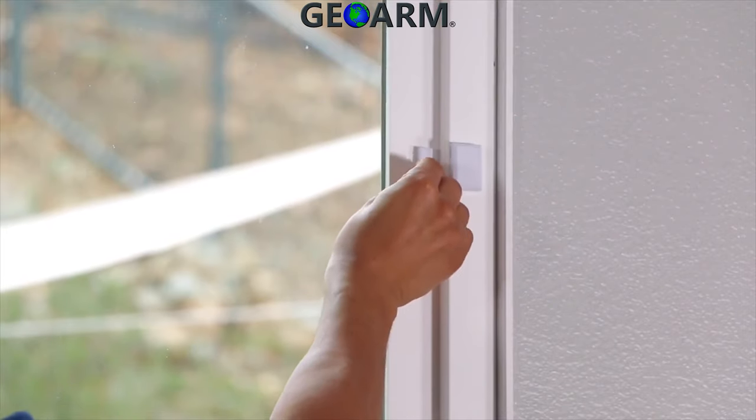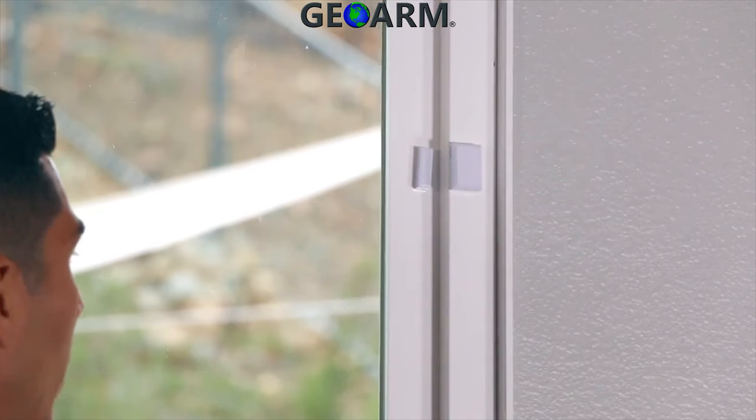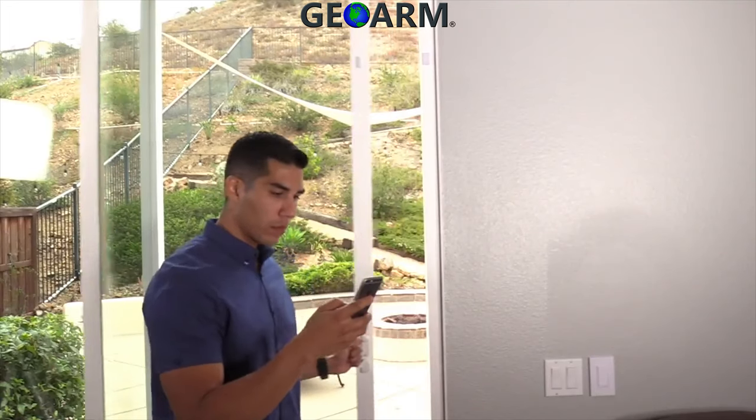Best practice is to leave a minimum of a quarter inch gap between the magnet or sensor on the door and the edge of the door frame.